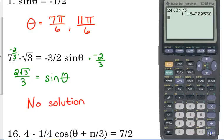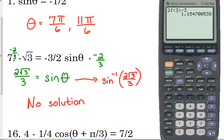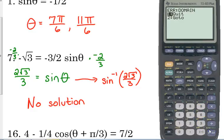If you recall from trig in Math 2 or Math 3, you could find the angle by doing inverse trig — inverse sine of 2√3/3. The reason I didn't mention that is because the calculator gives you a domain error. The sine is never greater than positive 1 or less than negative 1, so you can't do inverse sine of 2√3/3. That's another reason why there's no solution.